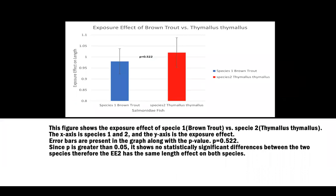This figure I generated shows the exposure effect of species 1, the brown trout, on the left side, versus species 2, Thymallus thymallus, on the right side. The x-axis shows species 1 and 2, and the y-axis is the exposure effect. I also created error bars and ran a t-test to get the p-value, which is 0.522. Since the p-value is greater than 0.05, there is no statistically significant difference between the two species. Therefore, we can conclude that EE2 has the same length effect on both species.